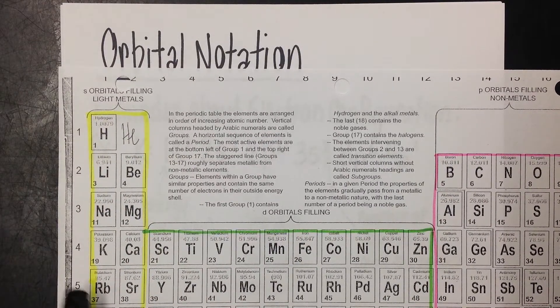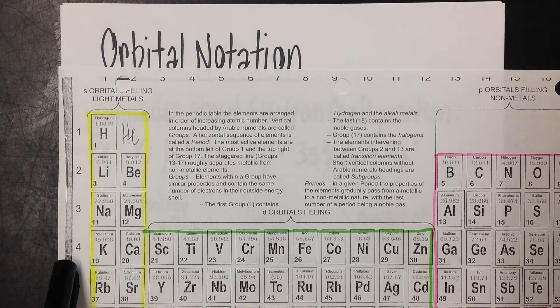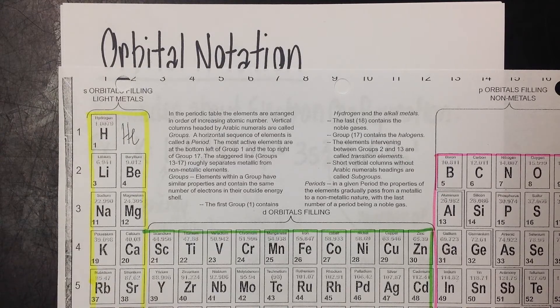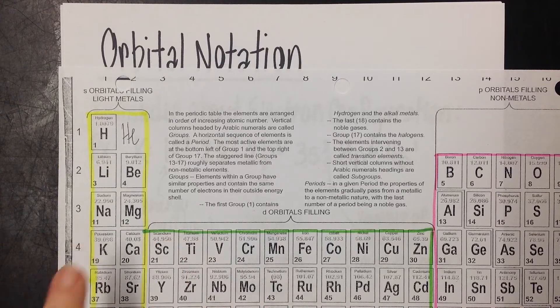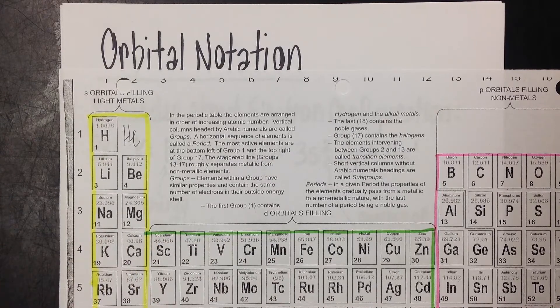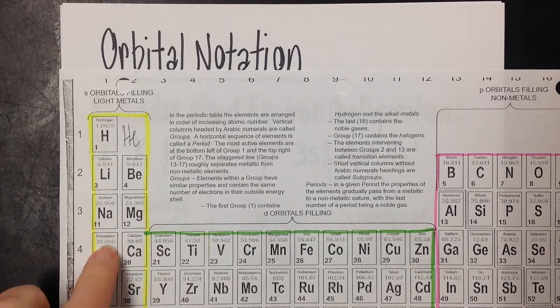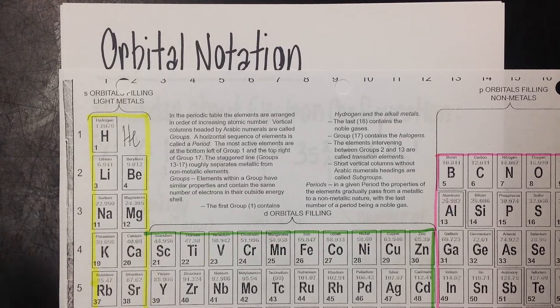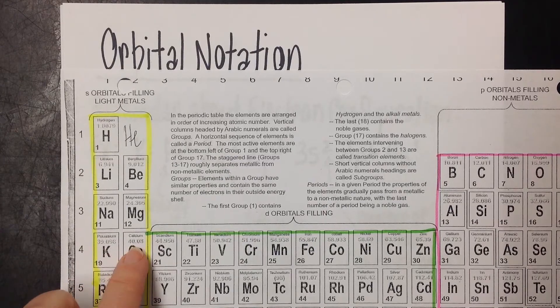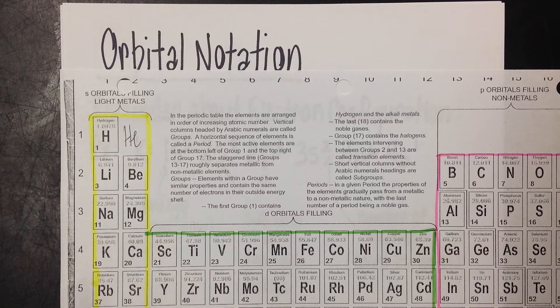And we literally get that number by counting over within the block on each row. For example, when we got to row 4 with potassium, it was row 4, block S, the first one over. If we would have been doing calcium, it would have been 4s2. So that exponent comes from how many you count over within a block.